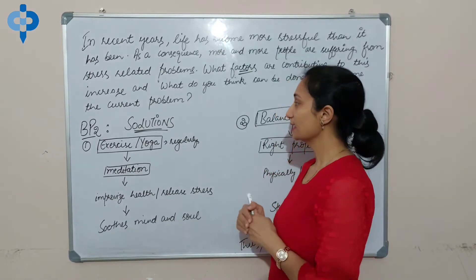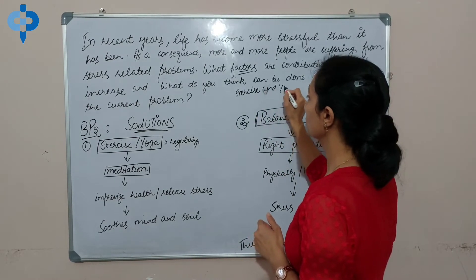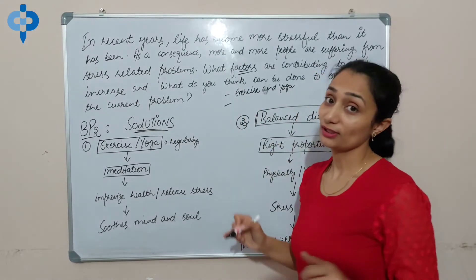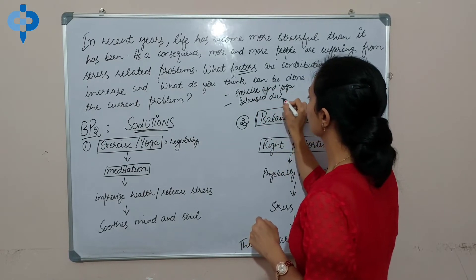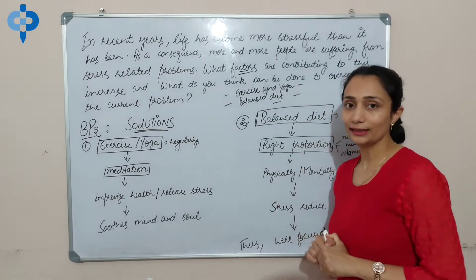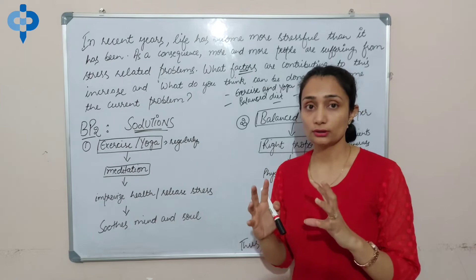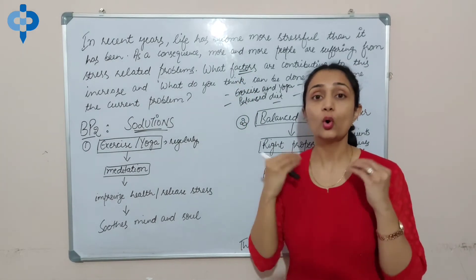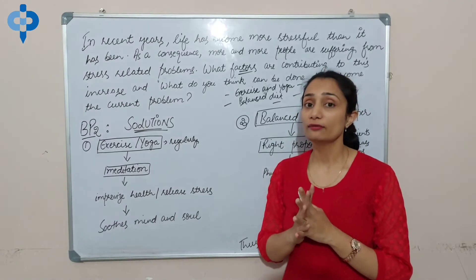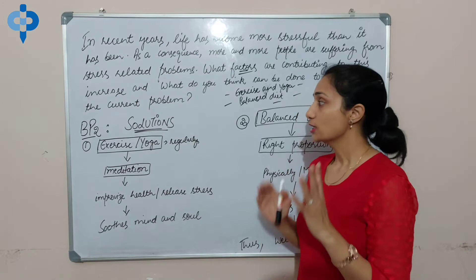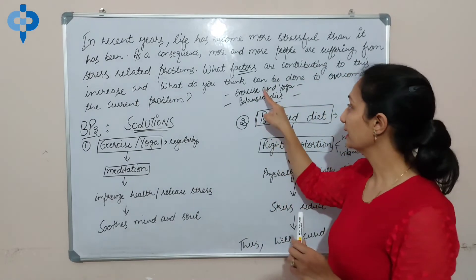Similarly, we will choose two solutions. As I mentioned at the start — we had written in the introduction: exercise and yoga. We can explain them separately, or we can explain them in a combined way. One very very important tip here: never give an example in the solution. Even if they have written 'give relevant examples from your own experience' — that applies to reasons, facts, causes. Give examples there. But never give an example in the solution — many marks will be deducted.